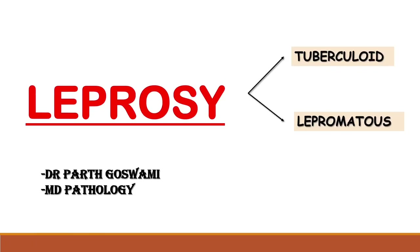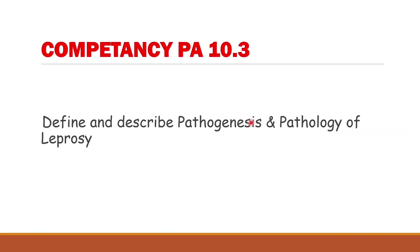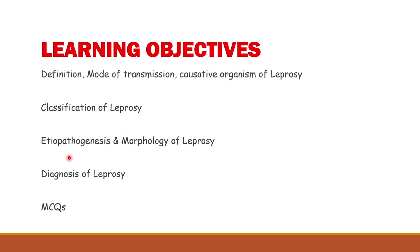Hello everyone, myself Dr. Parth, and today I am going to teach you a very important topic from pathology — leprosy — which comes under the category of infectious disease. Traditionally it is divided into tuberculoid and lepromatous types. This topic comes under competency number PA 10.3, in which students need to understand the definition and describe the pathogenesis and pathology of leprosy. Our learning objectives are: definition, mode of transmission, causative organism, classification, pathogenesis, morphology, and finally a few MCQs.